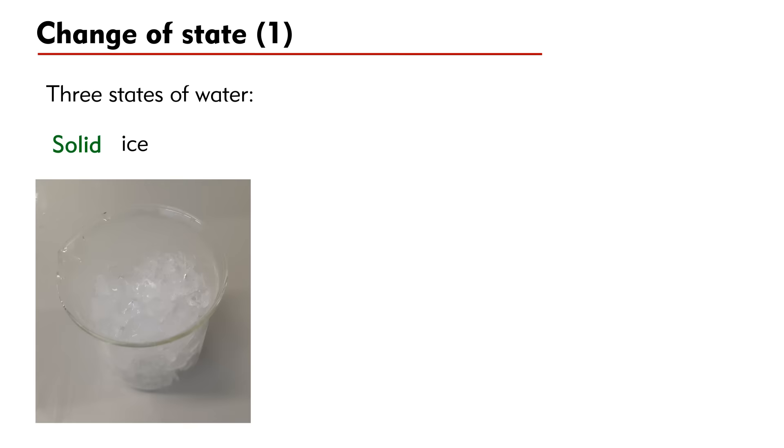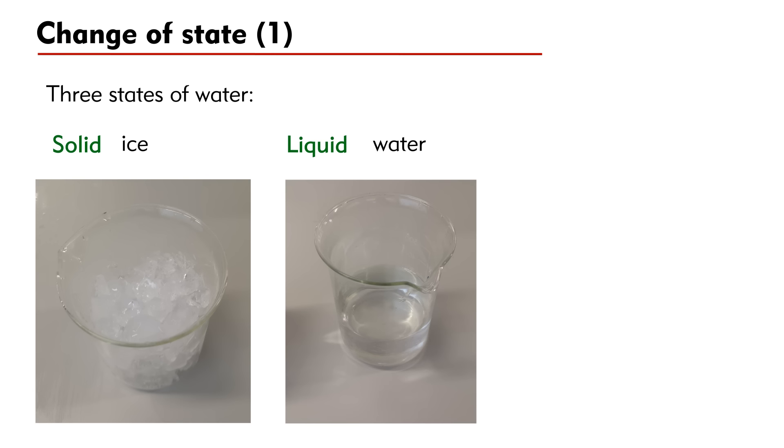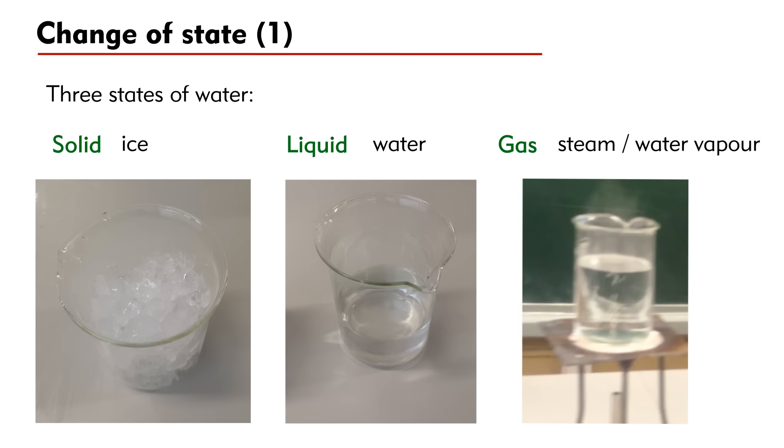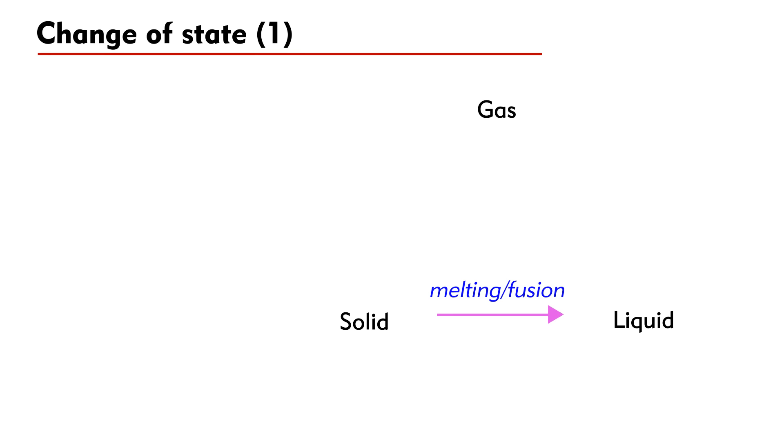Let's talk about water. Solid water is called ice. In liquid state, it is called water. In gas state, we call it steam or water vapor. A change from solid to liquid is called melting or fusion.